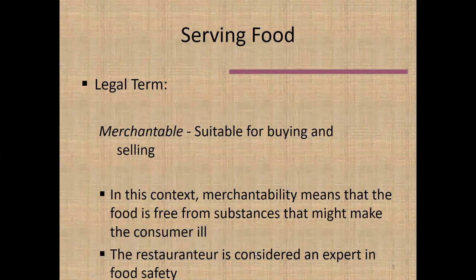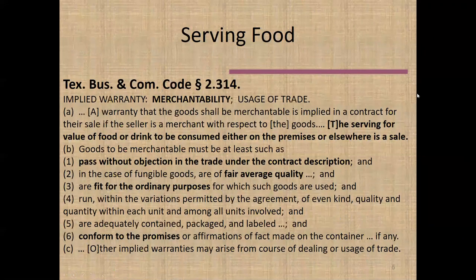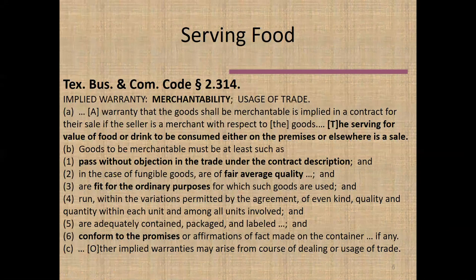The restaurateur is a merchant with respect to food and therefore an expert with respect to food safety. Looking at the statute, the implied warranty means what you're selling would pass without objection in trade under the contract description. So if you say you are selling Chilean sea bass but are actually selling a completely different fish, that would not pass without objection — that fish doesn't match your contract description. You must ensure your description is consistent with what you are actually selling.